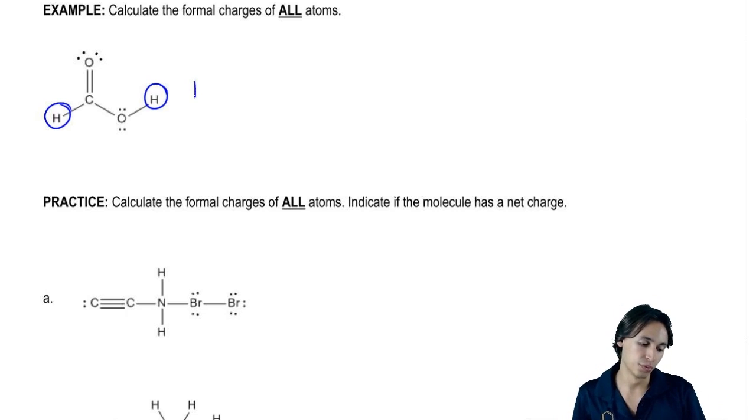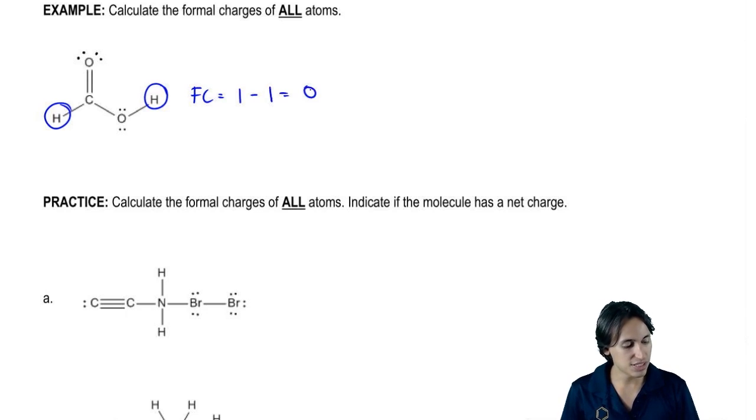Hydrogen is in what group? One. How many sticks does it have? One. How many dots does it have? Zero. So it's going to be one. According to my equation, my equation says that formal charge equals group number, which is one, minus sticks and dots, which is one. So it's zero. This has a zero formal charge.